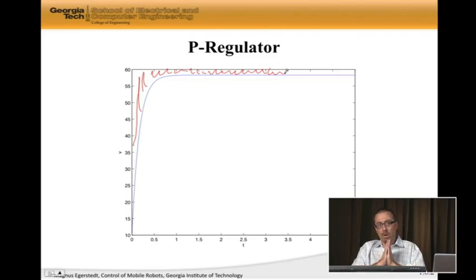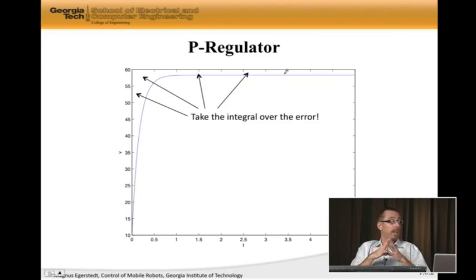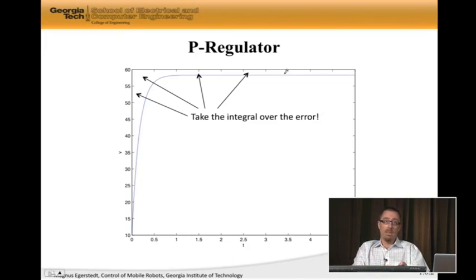So I wish there was some way of collecting things over time in a plot like this. And of course there is. This is something called an integral. So if we take the integral over the error, we're collecting the error over time. And over time, as this error is going to accumulate, it's going to give us enough pushing power to actually overcome the wind resistance.